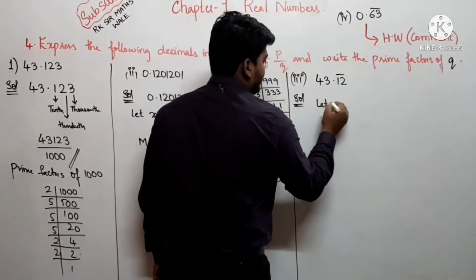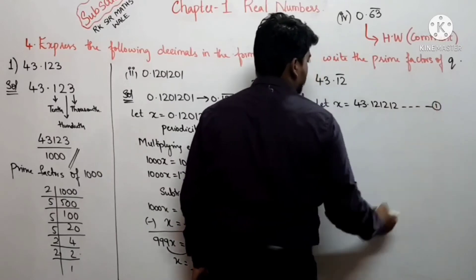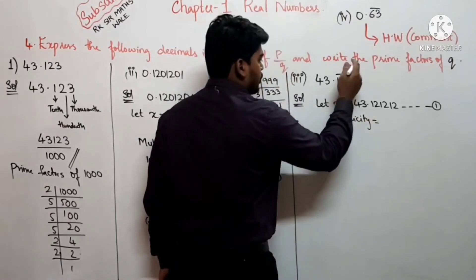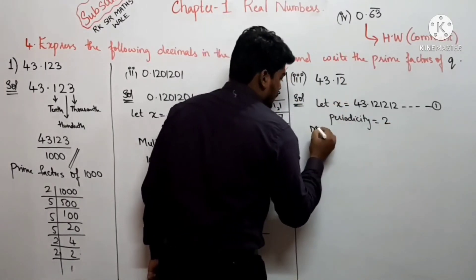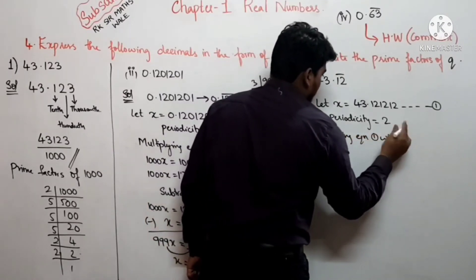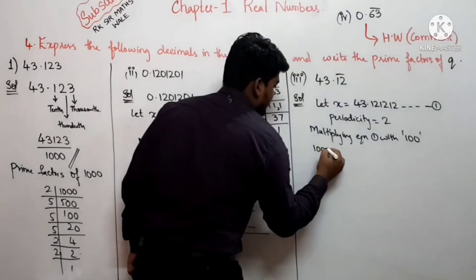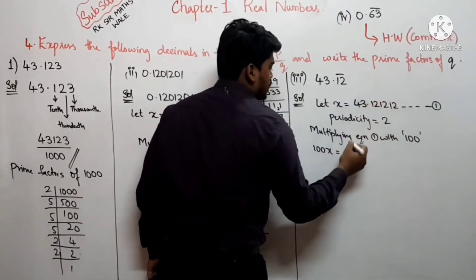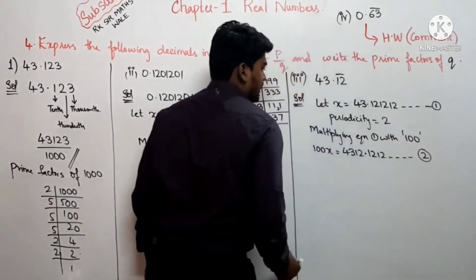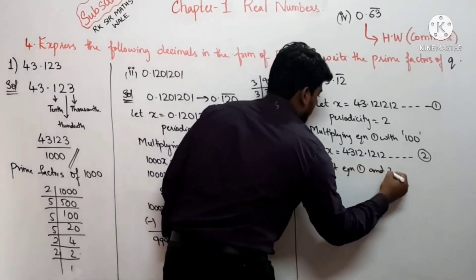Let x = 43.\(\overline{12}\) = 43.121212..., let this be equation number 1। Periodicity देखिए — 2 numbers के ऊपर bar है, तो periodicity है 2। Multiplying equation 1 with 100 (2 zeros) क्योंकि periodicity 2 है।